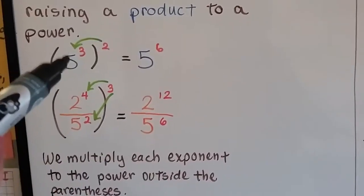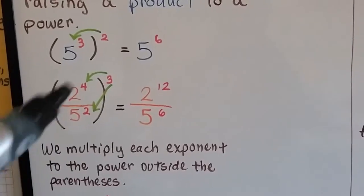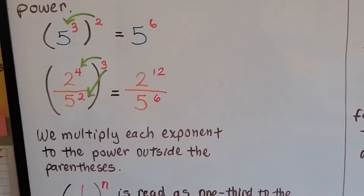So just as it went to the inside of the parentheses as this is the base, the numerator is a base and the denominator is a base to that exponent. We multiply each exponent to the power outside the parentheses.